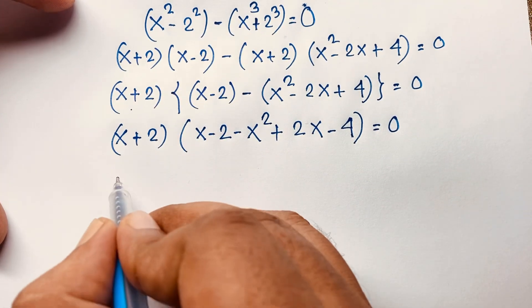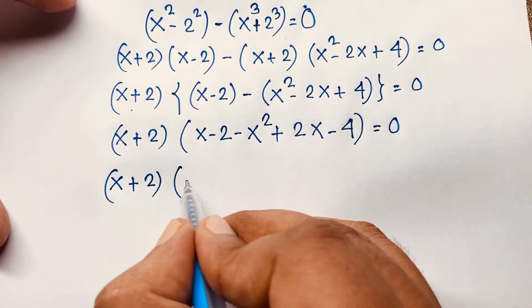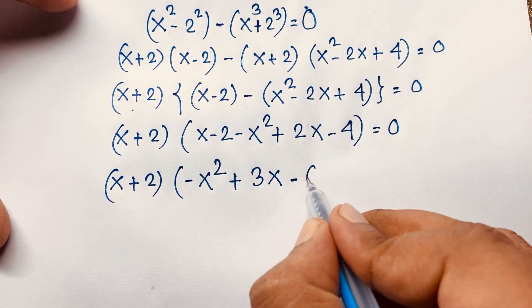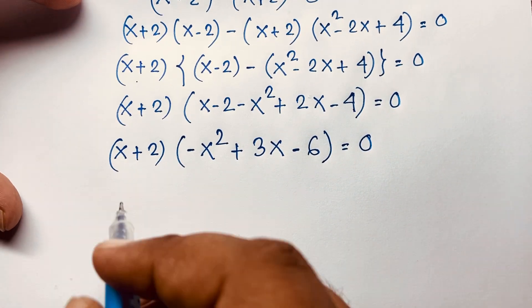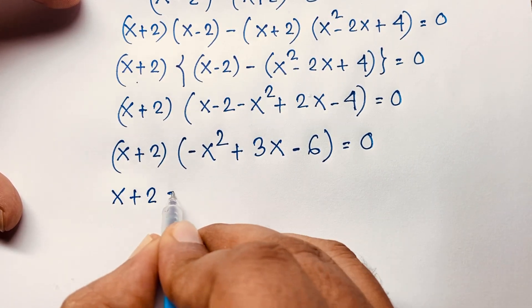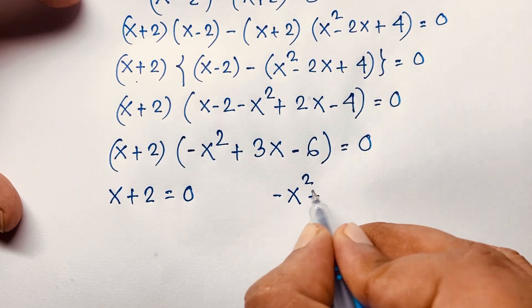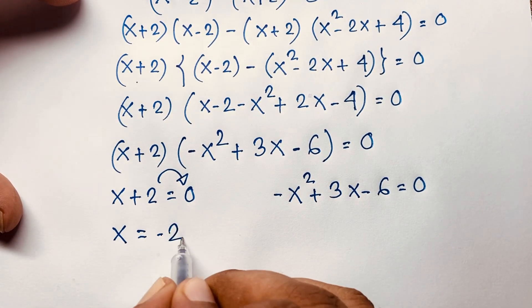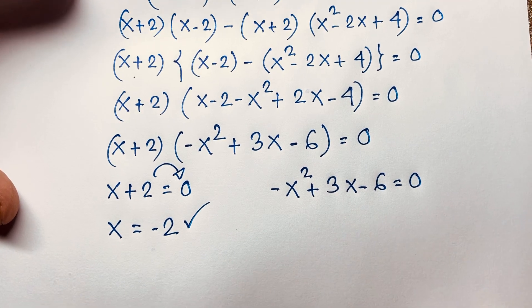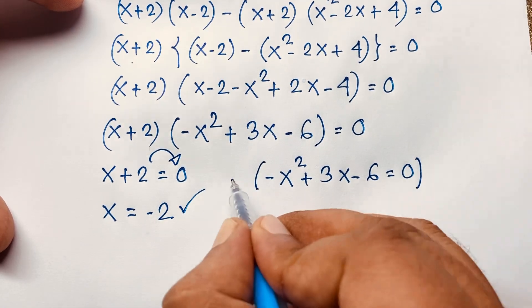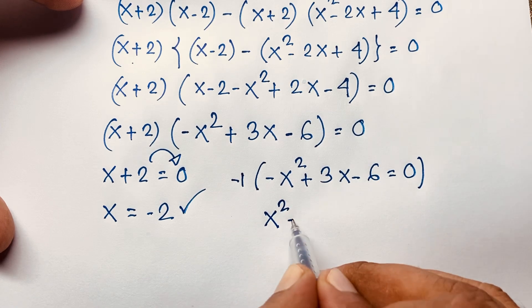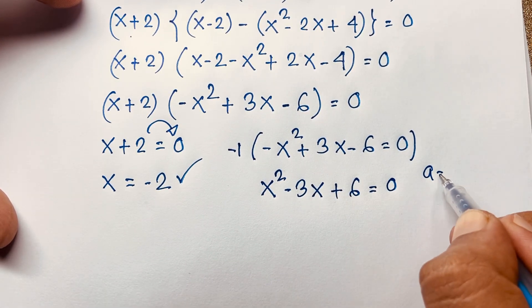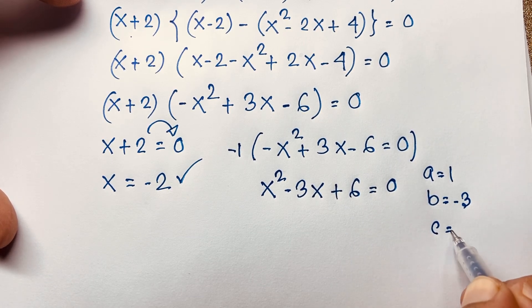So we get x plus 2 as our first case. Combining like terms in the second factor: negative x squared plus 2x plus x gives positive 3x, and minus minus gives negative 6, equal to 0. Our two cases are: Case 1 — x plus 2 equals 0, giving x equals negative 2 as our real solution. Case 2 — negative x squared plus 3x minus 6 equals 0. Multiplying both sides by negative 1 gives x squared minus 3x plus 6 equals 0, where a equals 1, b equals negative 3, c equals 6.